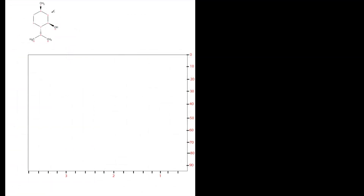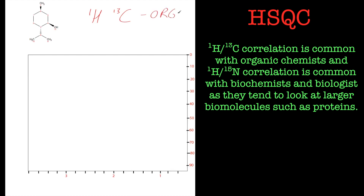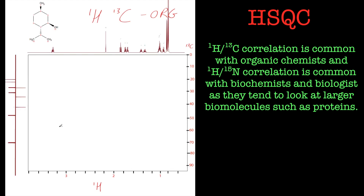Let's have a look at this small molecule, menthol. In organic chemistry we tend to do proton and carbon-13 correlations - so you've got carbon-13 on the Y axis and on the bottom you've got proton. When you put the spectra up, you'd have your proton spectrum on the top in the F2 dimension, and in the F1 dimension you've got your DEPT so it's nice and resolved.